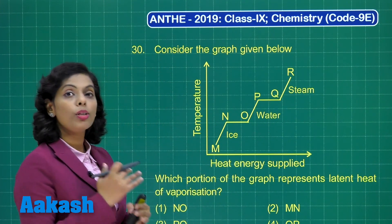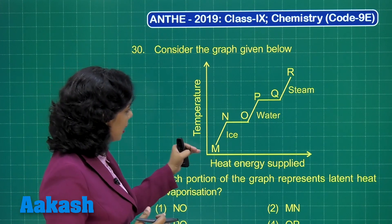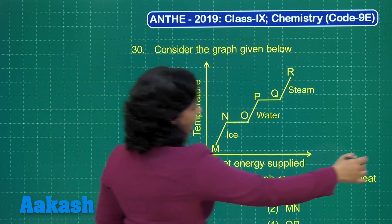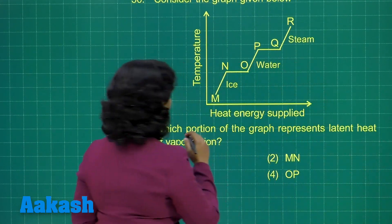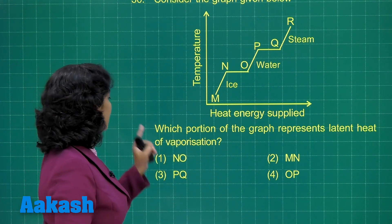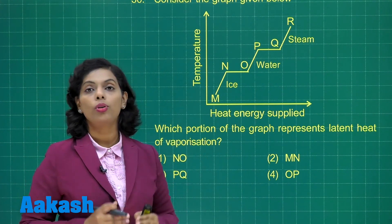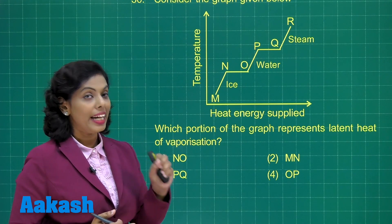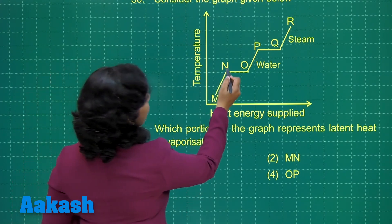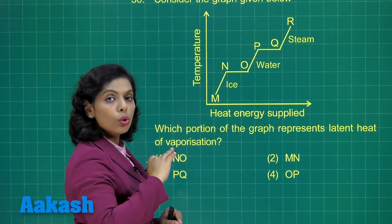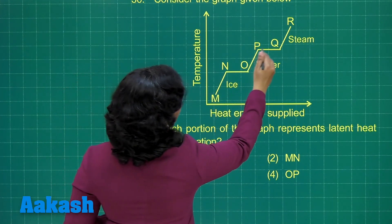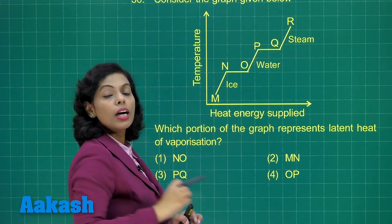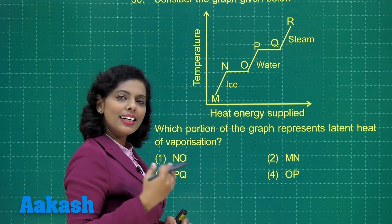This graph is representing the process of conversion of ice into water and water into steam — it is representing state conversion. The question asks which portion of the graph represents latent heat of vaporization. Latent heat is the amount of heat required to change the state of matter without changing its temperature. Portions NO and PQ both show no change in temperature, so whatever heat is supplied there is used as latent heat.